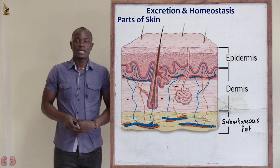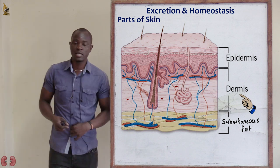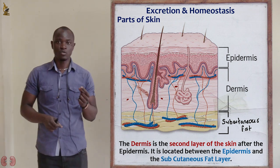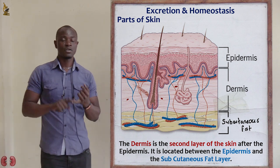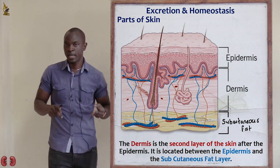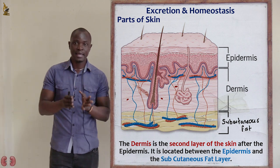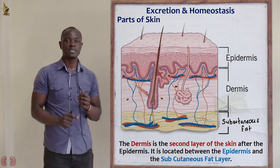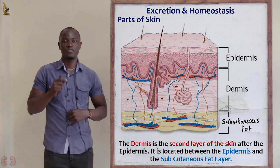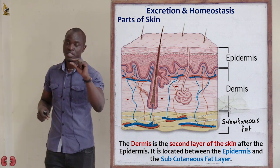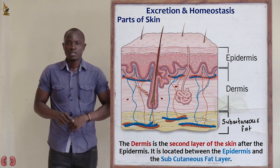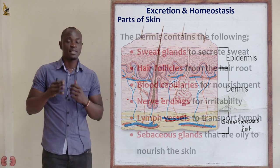Now let's look at the dermis, the second part of the skin. The dermis lies immediately below the malpighian layer of the epidermis. It is much thicker than the epidermis because it contains many other tissues and structures which facilitate the smooth functioning of the skin.